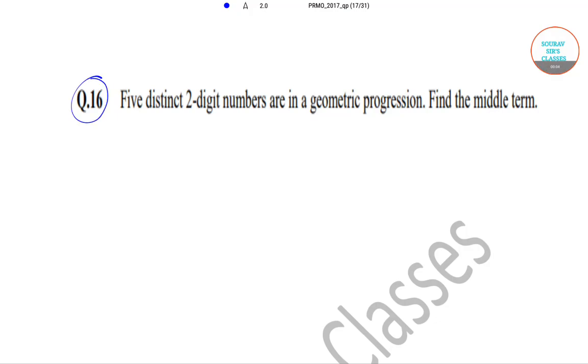Hello, today we'll be solving question number 16. In this question, five distinct two-digit numbers are in a geometric progression. We need to find out the middle term.